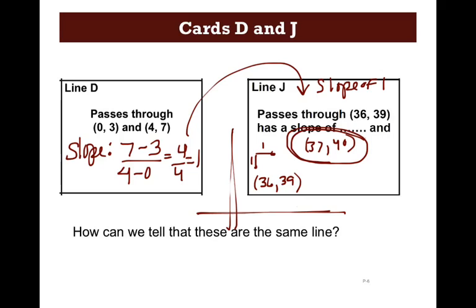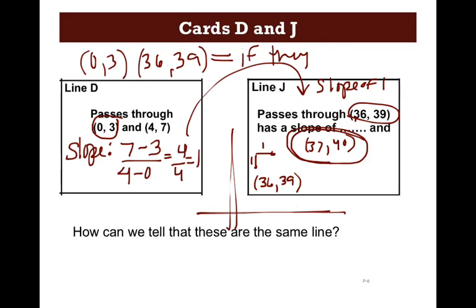One other thing you can do is if you know the slope of each is 1, you could take two of the points. Like, let's take 0, 3, and 36, 39. And if these two numbers have a slope of 1, then it's the same line. So that's another tip, another way that you could figure out. Take one point from each card and decide if that's the same slope. So determine if they're the same line and write notes on your page.